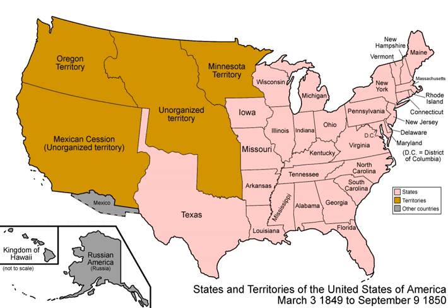California was admitted as a free state; it passed the House 150-56 and the Senate 34-18. The slave trade was abolished in the District of Columbia. The territory of Utah was organized under the rule of popular sovereignty, passing the House 97-85. The territory of New Mexico was organized under the rule of popular sovereignty, passing the House 108-97 and the Senate 30-20. A harsher Fugitive Slave Act was passed by the Senate 27-12 and by the House 109-76.